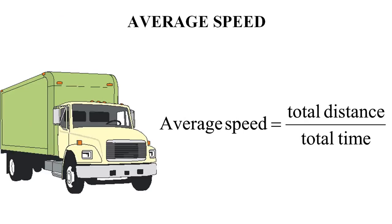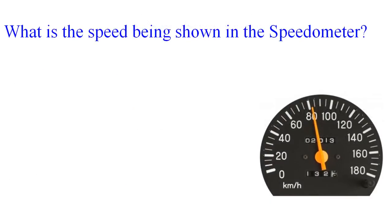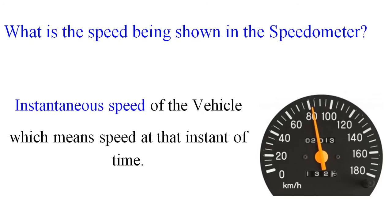Average speed is defined as the total distance covered divided by the total time taken. Bodies do not maintain constant speed throughout their journey; they keep changing speed depending on the situation. The speed shown on the speedometer is not average speed — it is the instantaneous speed of the vehicle, meaning the speed of the vehicle at that particular instant of time.